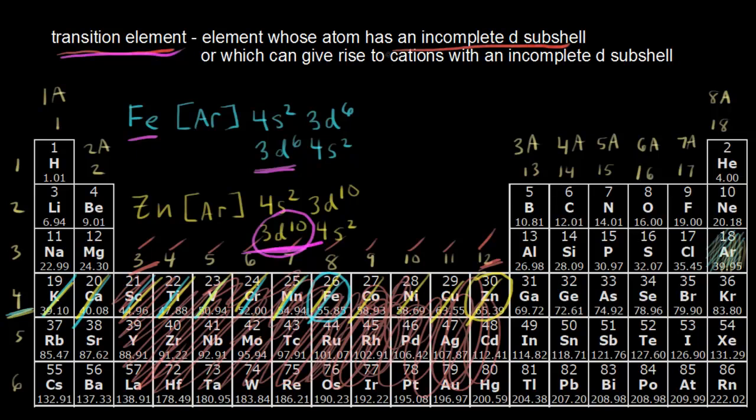Now, also in the definition, it talks about cations. So let's think about the cation that zinc would form. Zinc would go to zinc 2+. So if I wanted to write the electron configuration for zinc 2+, I need to think about where does zinc lose two electrons? So if you're going from a neutral atom of zinc to zinc 2+, you would have to lose two electrons.